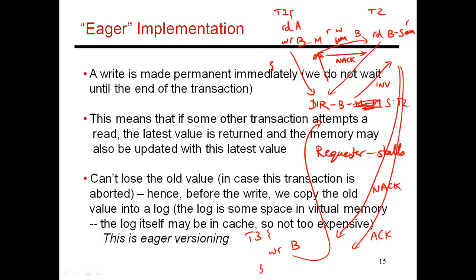We can also do eager versioning, where when the block is evicted from cache, you can copy the old value into a log and make this value visible to the rest of the world right away. But you still have to add some more state so that you can detect a conflict, because even though the block may have overflowed from cache, the transaction is not quite over. In this case, conflicts are detected as soon as they happen.